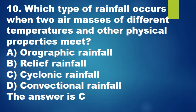Question 10: Which type of rainfall occurs when two air masses of different temperatures and other physical properties meet? A. Orographic rainfall, B. Relief rainfall, C. Cyclonic rainfall, D. Convectional rainfall. The answer is C.